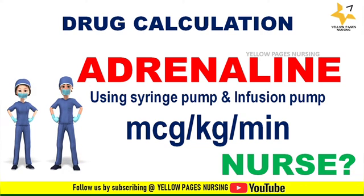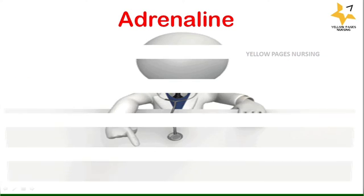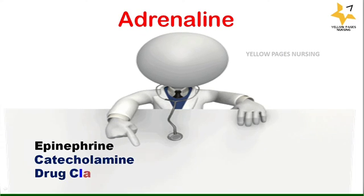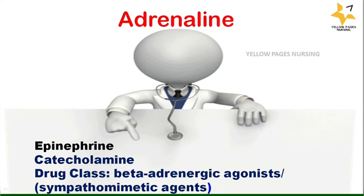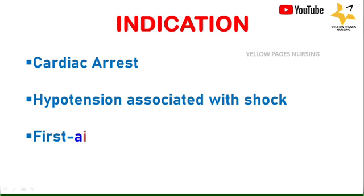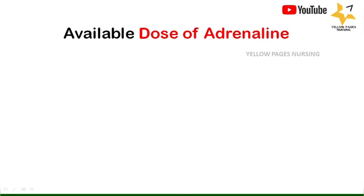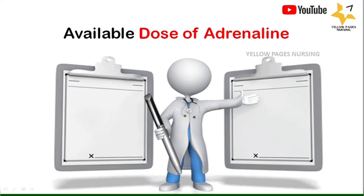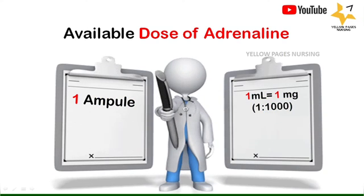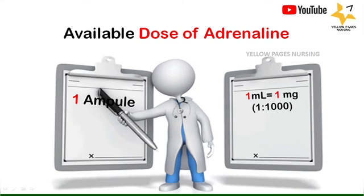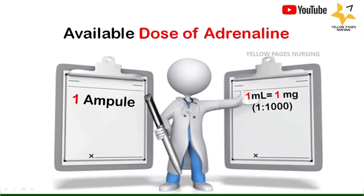Adrenaline, also known as epinephrine, is a catecholamine and comes under the drug class beta-adrenergic agonists or sympathomimetic agents. Indications include cardiac arrest, hypotension associated with shock, and first aid treatment of anaphylaxis. Adrenaline comes in ampoule form: 1 ml containing 1 mg (1:1000), that is, 1 ml contains 1000 micrograms.